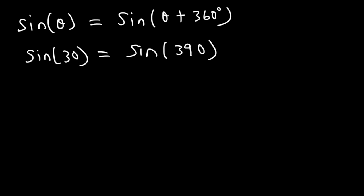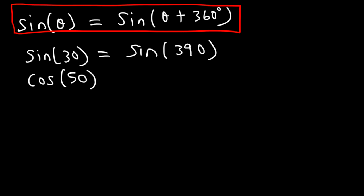Now this equation is true for all of the trigonometric functions: cosine, tangent, cotangent, it's all true for each and every one of them. So cosine of 50 is going to be equal to cosine of 50 plus 360, or cosine of 410. Cosine of pi is equal to cosine pi plus 2 pi, or cosine 3 pi.